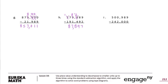2 minus 1 is 1. 0 minus 2 — can't do, so I borrow from the 2, it becomes a 1. 10 minus 2 is 8. 1 minus 0 is 1. 1 minus 9 — can't do, this becomes 4. 11 minus 9 is 2. 4 minus 3 is 1. And 4 minus 2 is 2. The extra is 212,181. To check, let's add 239,021 plus 212,181: 1+1=2, 2+8=10 carry the 1, 1+1=2, 9+2=11 carry the 1, 1+3+1=5, 2+2=4. We get 451,202 — it checks out.